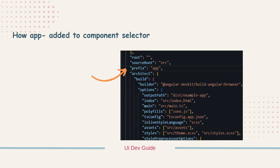When you create a component — suppose you write 'ng generate component' and the component is called 'info' — the selector gets 'app-hyphen-info' added. From where does that 'app' prefix get added? In the selector in the component decorator, it will add 'app-info'. That is correct — in the selector it will add 'app-hyphen-info'. But from where does that 'app' prefix get appended, even though you are only giving 'info'?